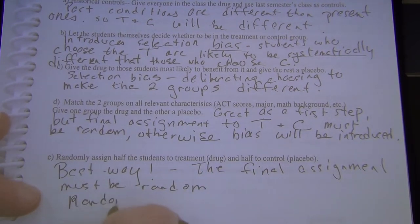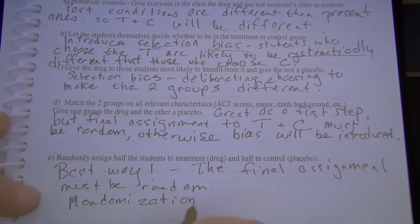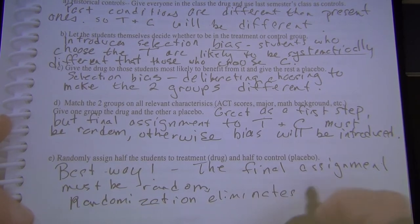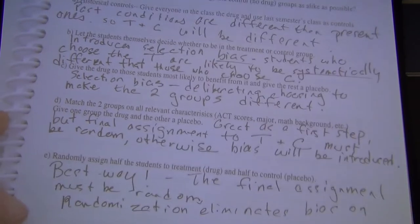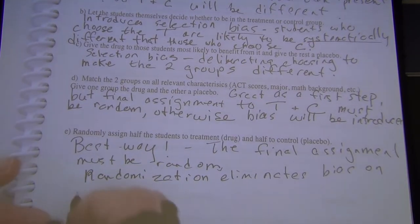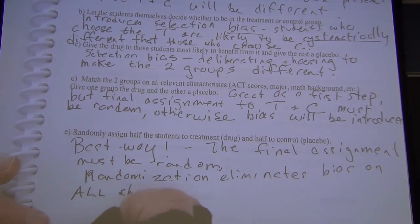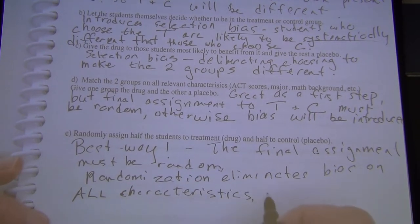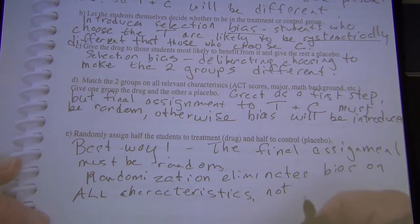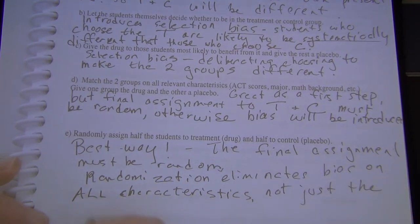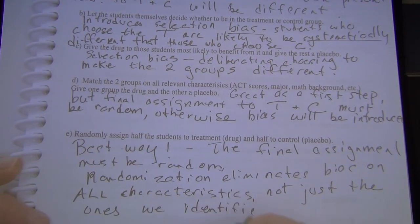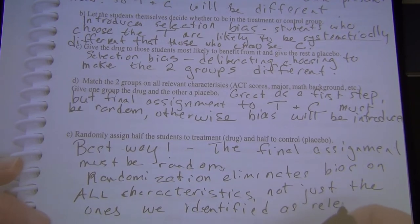A key point: randomization eliminates bias on all characteristics — not just the ones we are able to identify as relevant.